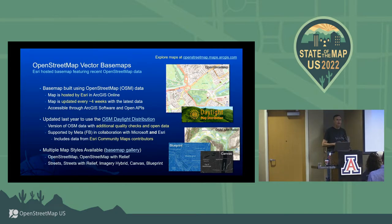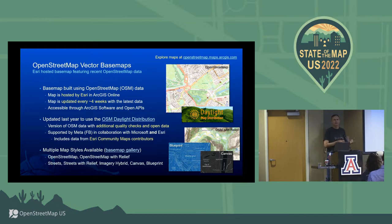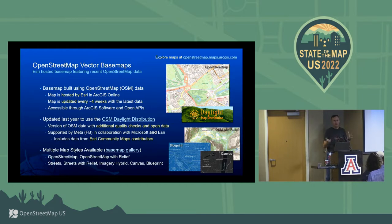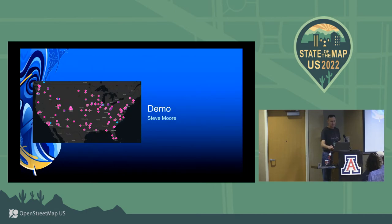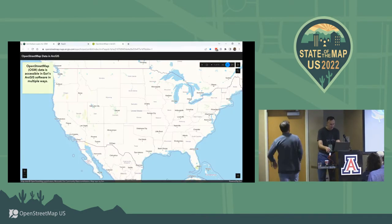We have a vector tile base map of OpenStreetMap powered by the OSM Daylight distribution. This map is designed to be very highly performant and scalable. Rather than relying on OpenStreetMap.org and their generosity for tiles, we're hosting our own copy of OSM as vector tiles in ArcGIS Online. Vector tiles can be restyled in many ways — we have many off-the-shelf styles, including the default OSM cartography plus other Esri styles. We make them available to the ArcGIS community as well as to others through open source APIs. With that, I'll hand it over to Steve for a quick demo.